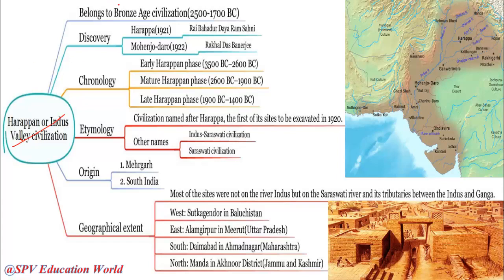Now we shall see what the Harappan or Indus Valley Civilization is. It belongs to the Bronze Age — that means 2500 to 1700 BC, during which period it was running. Next, regarding discovery: Harappa was discovered in 1921 by Rai Bahadur Dayaram Sahni — remember Dayaram Sahni. And Mohenjo-daro was discovered in 1922 by Rakhal Das Banerjee. These are the two persons who discovered the places Harappa and Mohenjo-daro.